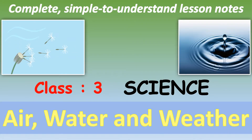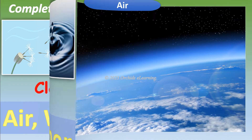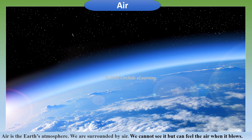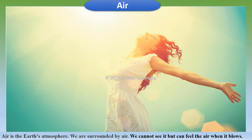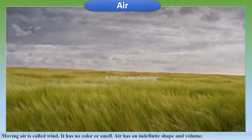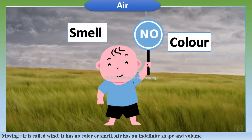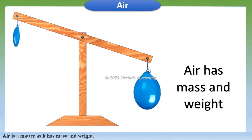Air is the Earth's atmosphere. We are surrounded by air. We cannot see it but can feel the air when it blows. Moving air is called wind. Air has no color or smell. It has an indefinite shape and volume. Air is matter as it has mass and weight.